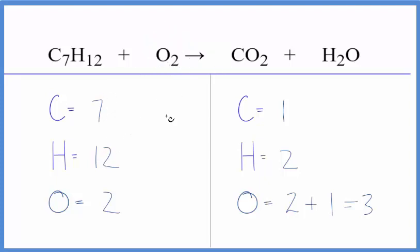So we'll start with the carbon. Let's put a 7 in front of the CO2, 1 times 7. That'll give us 7 carbon atoms. Update our oxygens. Now we have 7 times 2, that's 14, plus the 1 right here, so that's 15 oxygen atoms.